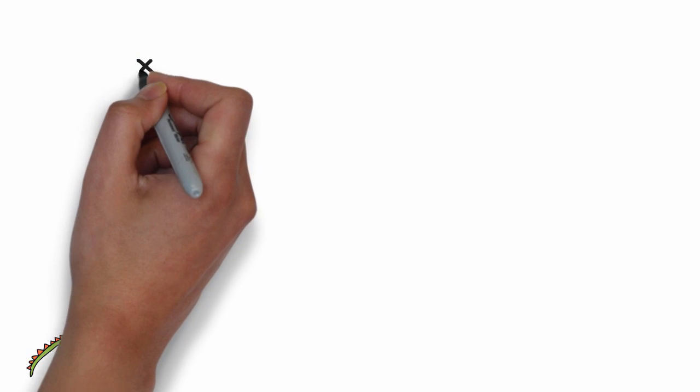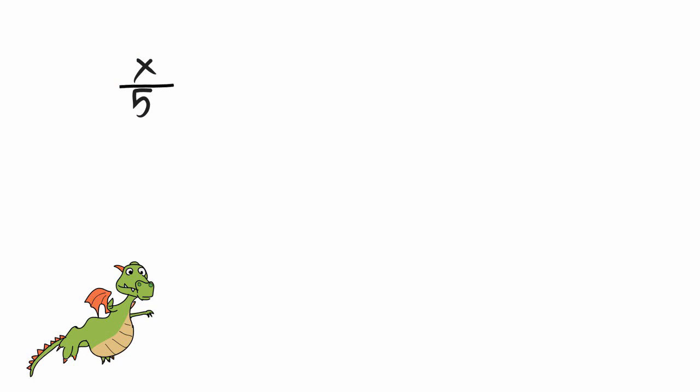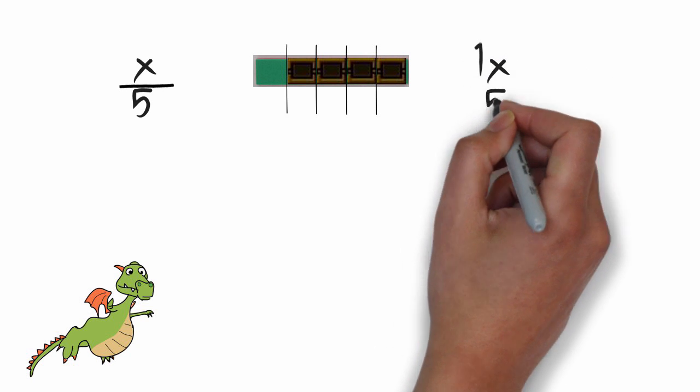Let's look at the fraction x over 5, or we can say x divided by 5. What that means is I have an unknown quantity, and I'm dividing it into 5 equal parts, but I'm only concerned about one of those parts. So another way of looking at that is to say 1 fifth x.